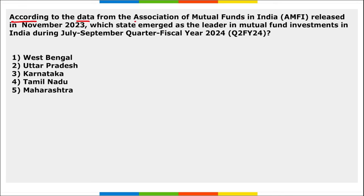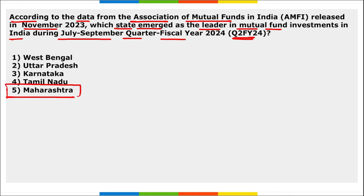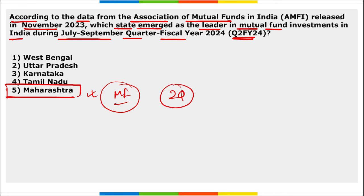Next: according to data from the Association of Mutual Funds in India released in November, which state emerged as the leader in mutual fund investments during the July-September quarter of FY24 (Q2 FY24)? It is Maharashtra. Maharashtra emerged as the leader, followed by Gujarat in second position and Karnataka in third position.